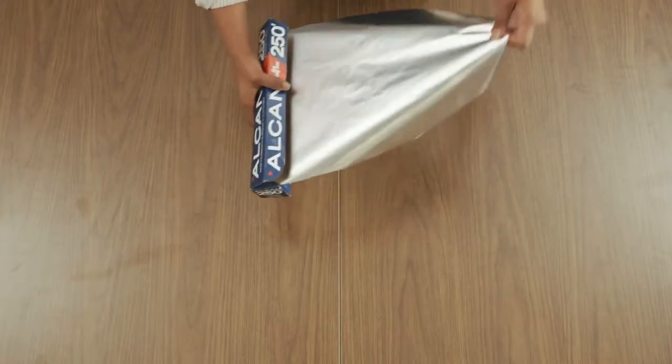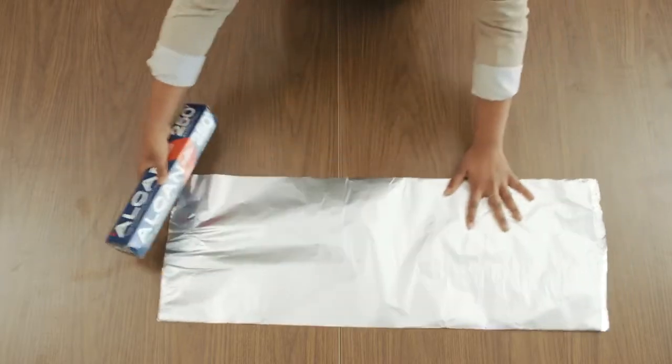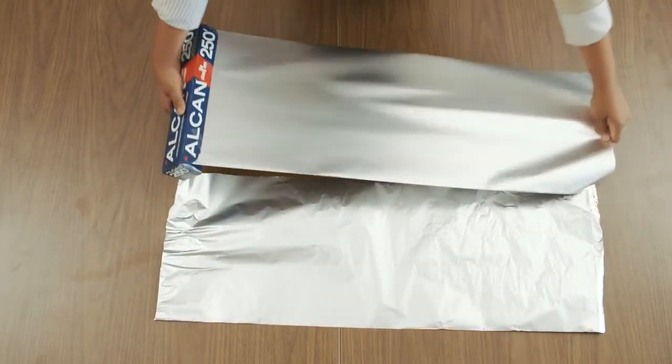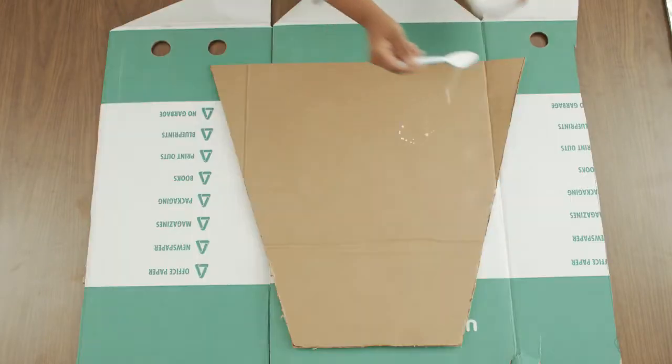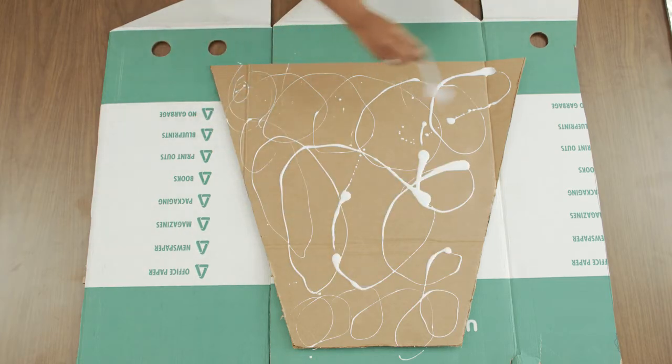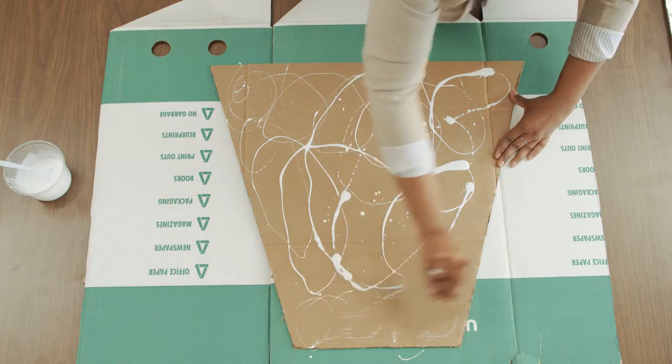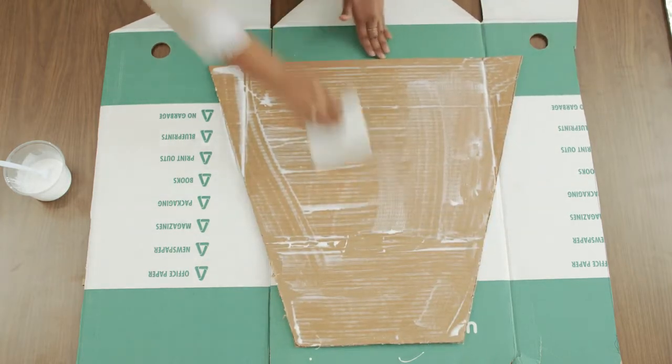Unroll enough aluminum to cover one section. Keep the foil smooth and flat as possible. Wrinkles and creases in the foil will reduce the efficiency of the reflector. Apply a thin layer of white glue over the entire surface of the cardboard including corners. Use the flat edge of a piece of scrap cardboard as a squeegee to spread the glue out evenly.